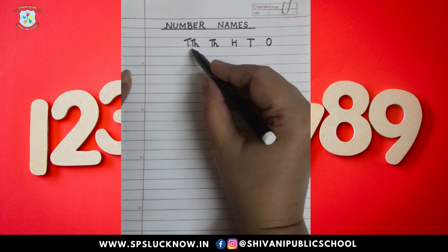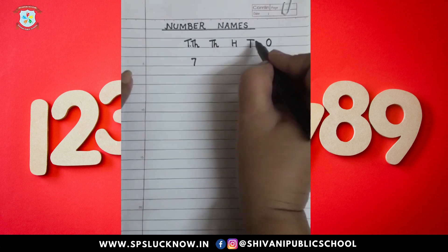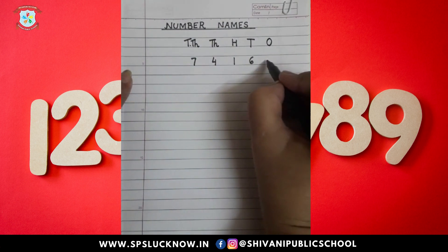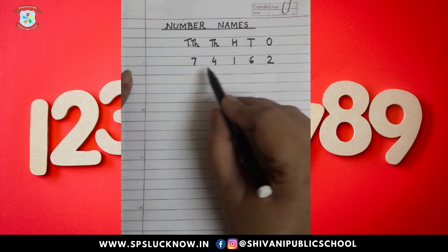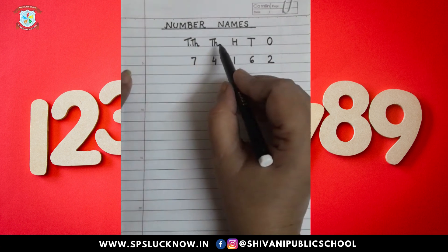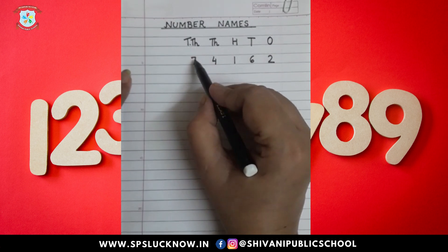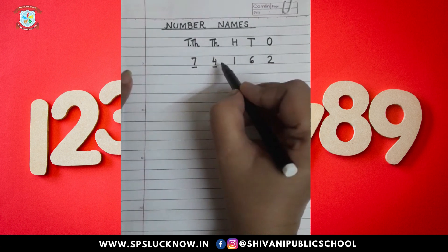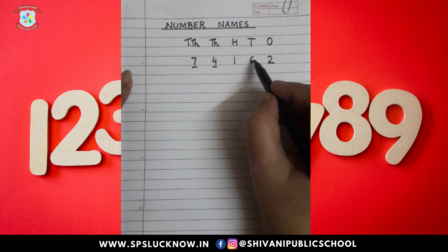I have taken the place up to ten thousand. Now I am writing some digits below these places: 7, 4, 1, 6, 2. How will we read these numbers? We will read them according to the places. This place is thousands and this is ten thousand. The numbers under the thousands places we will read in a group — so, 74,000, one hundred and sixty-two.